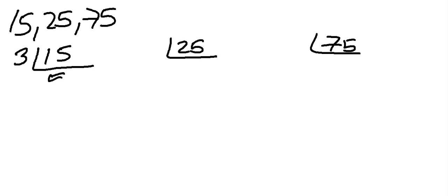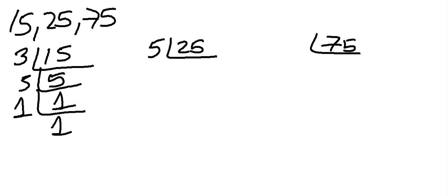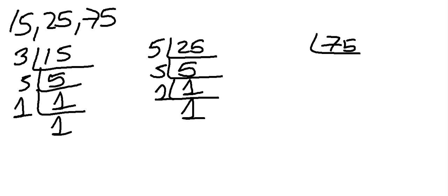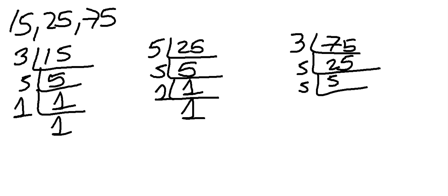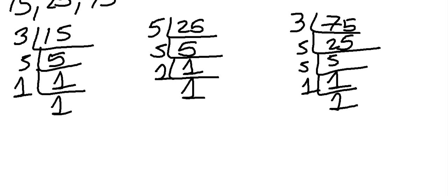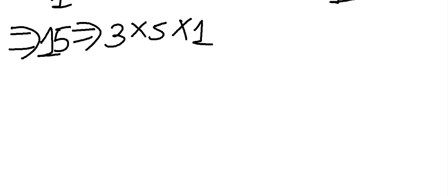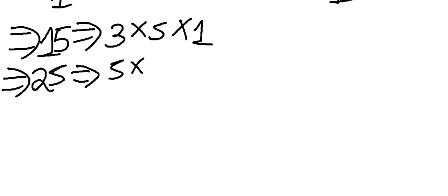The prime factors of the number 15 are 3, 5, and 1. The prime factors of the number 25 are 5, 5, and 1. The prime factors of the number 75 are 3, 5, 5, and 1. So: 15 = 3 × 5 × 1, and 25 = 5 × 5 × 1.